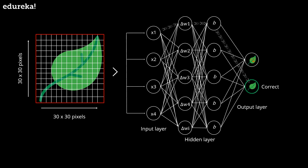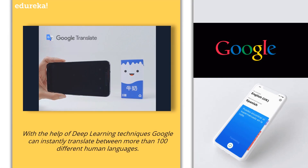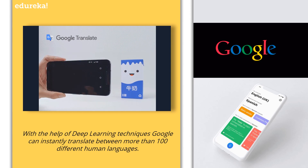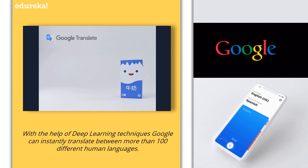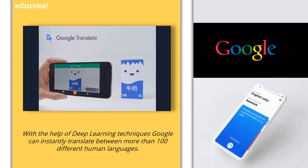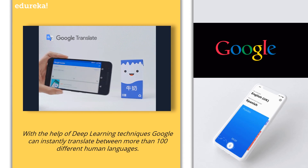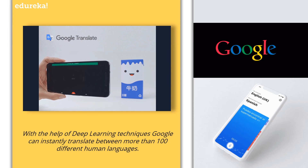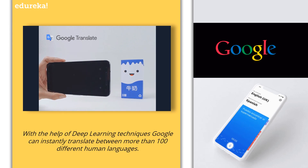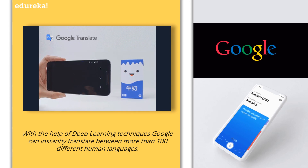Let's discuss a few real-world applications of neural networks. With the help of deep learning techniques, Google can instantly translate between more than 100 different human languages. Visual translation is an interesting application of deep learning — it can be used to identify images that have letters. Once identified, they can be turned into text, translated, and then the images are recreated with the translated text. In fact, Google has an app for this purpose called the Google Translate app.